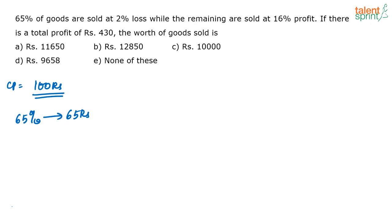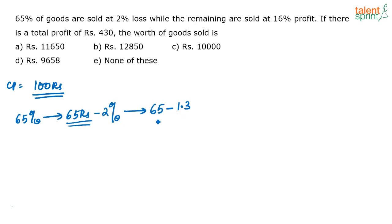2% of 65 is 1.3 — that is 0.65 plus 0.65. So when I am selling goods that cost 65 rupees at 2% loss, I will sell them at 65 minus 1.3, which equals 63.7 rupees.